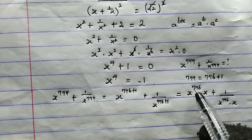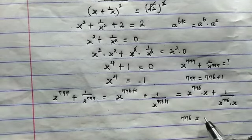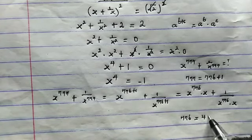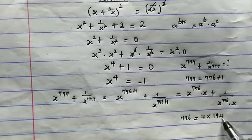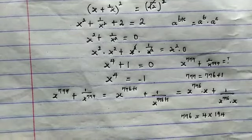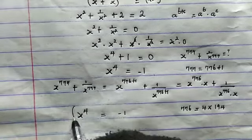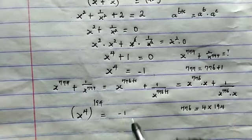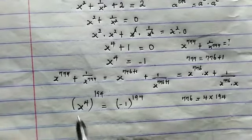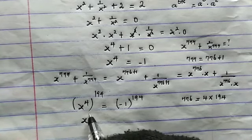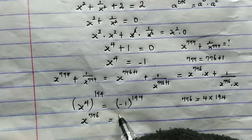Now let us evaluate x to the power of 776. Luckily, 776 equals 4 multiplied by 194. From the equation x to the power of 4 equals negative 1, let's raise both sides to the power of 194. From the left, we have x to the power of 4 times 194, which gives us x to the power of 776. This equals negative 1 to the power of 194, which is an even number, giving us positive 1.